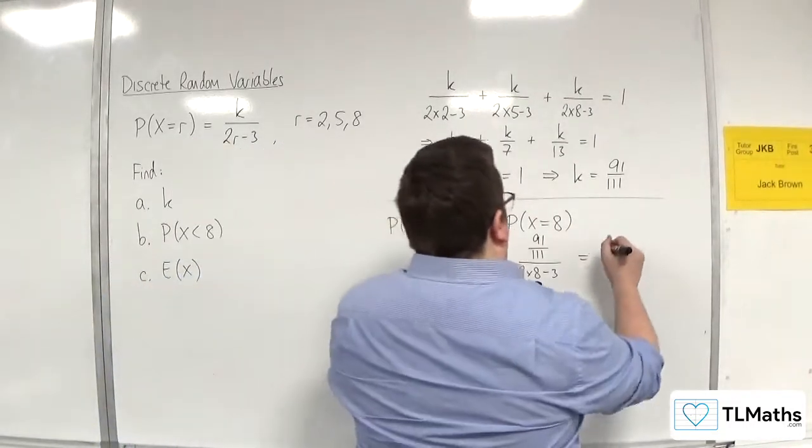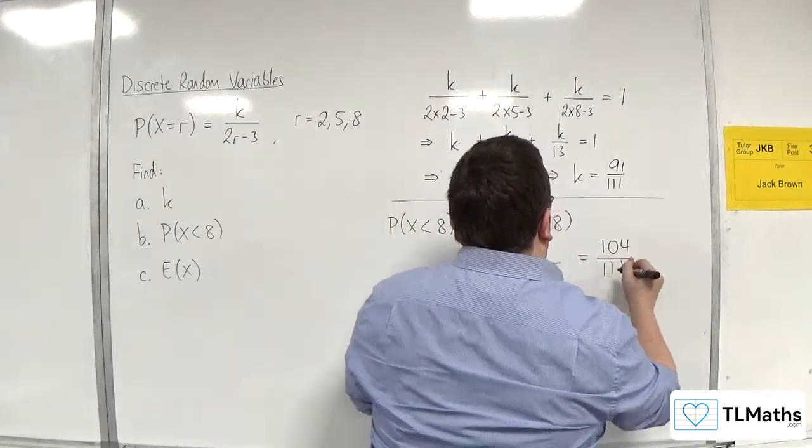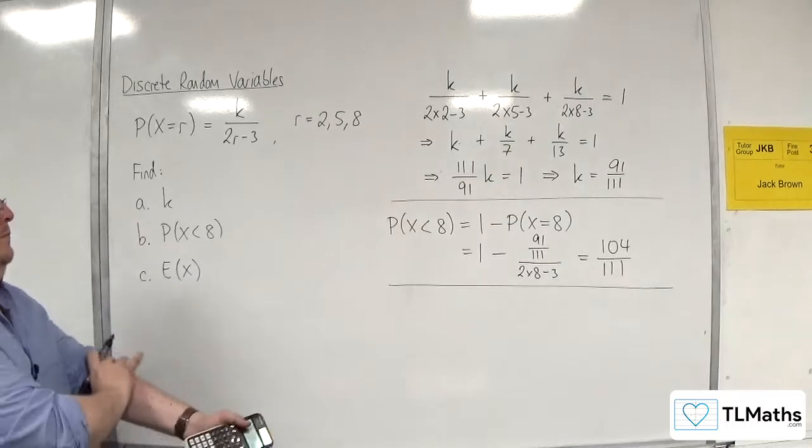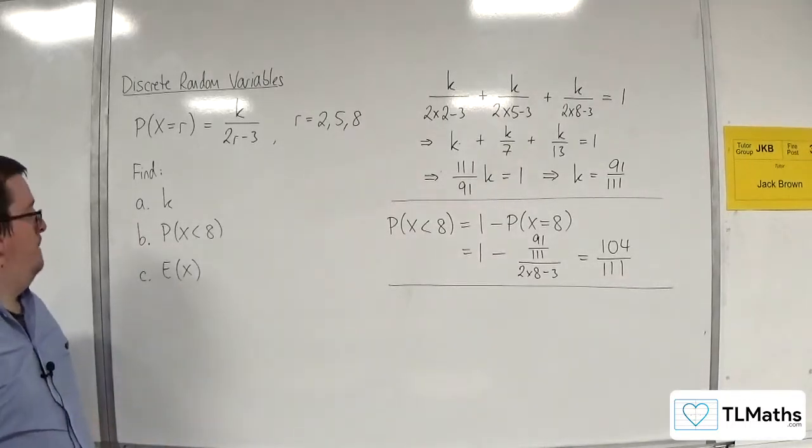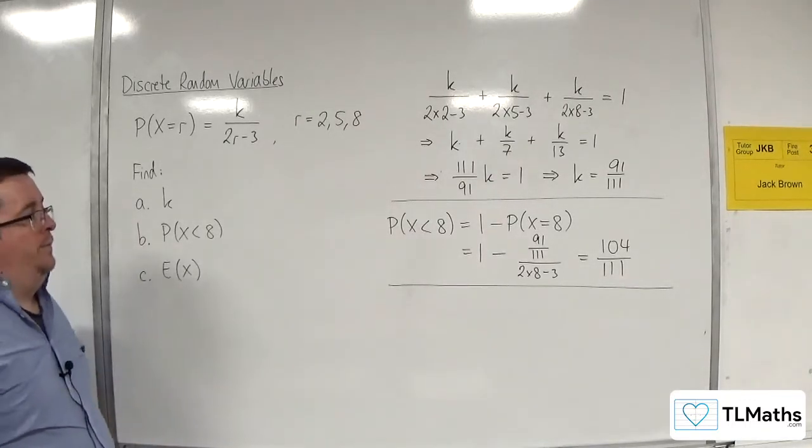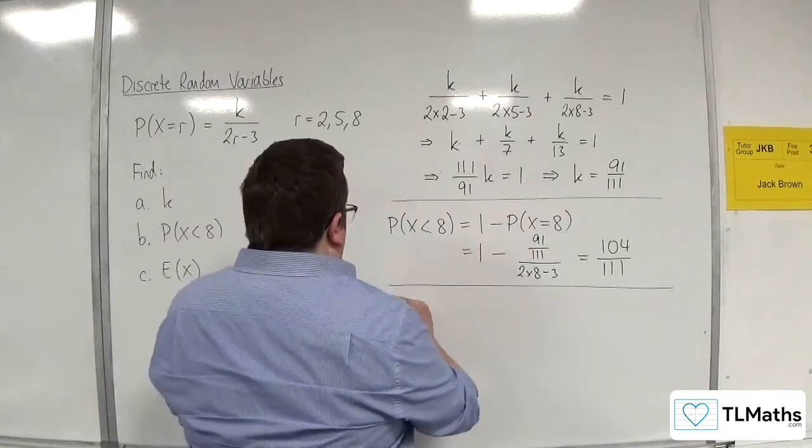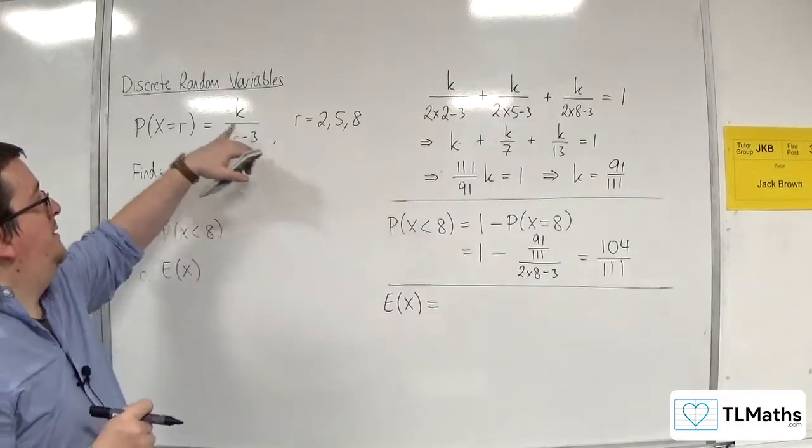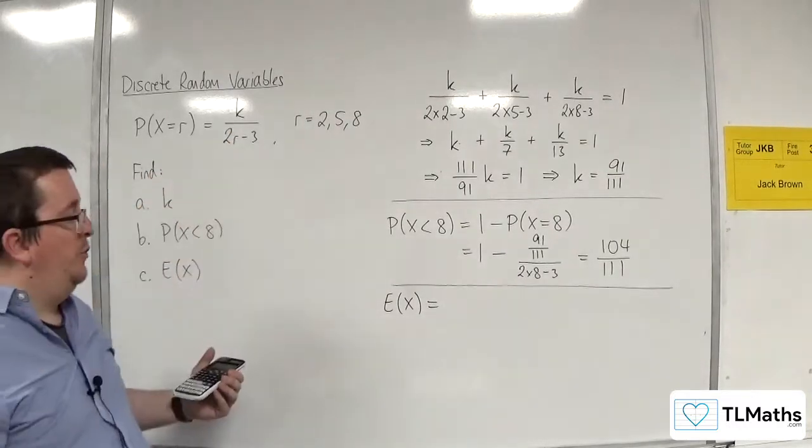And we should get 104 over 111. Right. OK, e of x. So e of x, I need to multiply the 2, 5, 8 by each of their probabilities and add them all together.